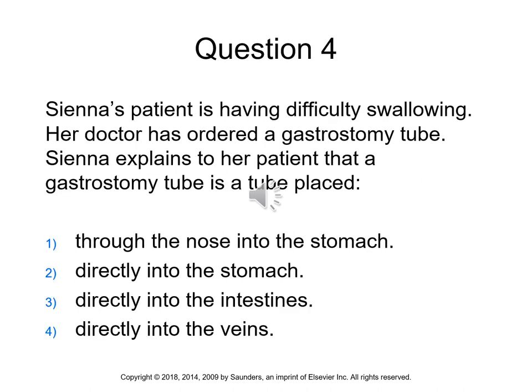Question 4: Sienna's patient has difficulty swallowing and the doctor has ordered a gastrostomy tube. Sienna explains that a gastrostomy tube is placed directly into the stomach. A nasogastric tube is placed into the stomach through the nose. A jejunostomy tube is placed into the intestines. An intravenous line is placed directly into the veins.